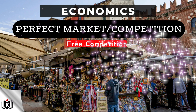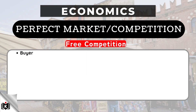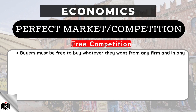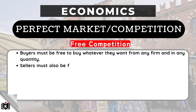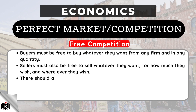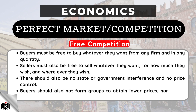In a perfect market, there is also free competition, meaning buyers must be free to buy whatever they want, from any firm, and in any quantity. Sellers must also be free to sell whatever they want, for how much they wish, and wherever they wish. There should be no state or government interference and no price control. Buyers should not form groups to obtain lower prices, nor should sellers combine to enforce higher prices.